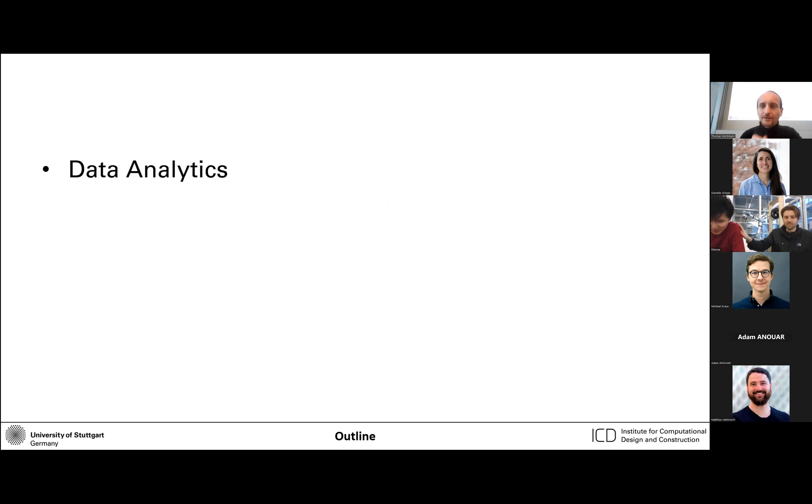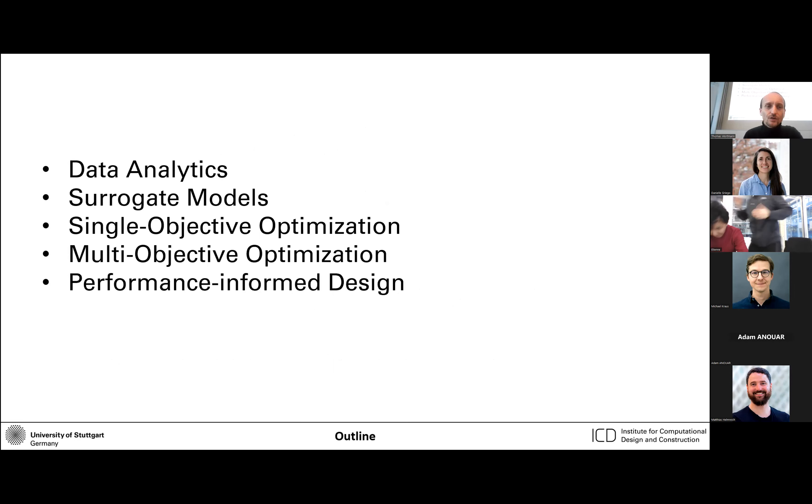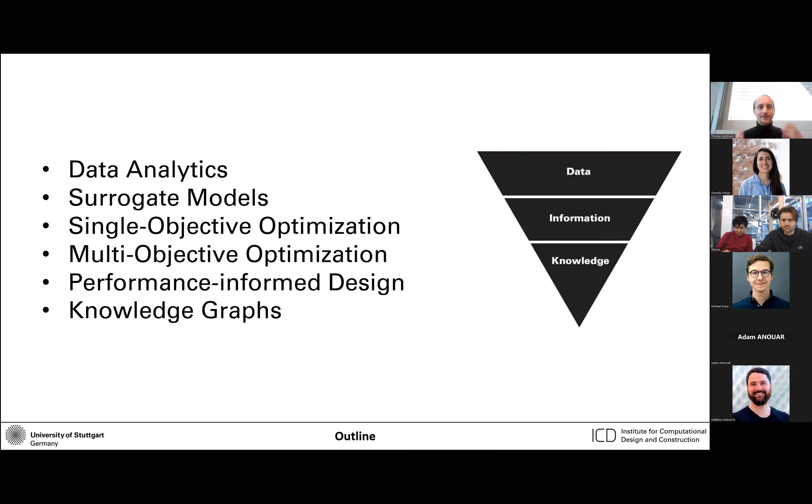We're going to talk a little bit about data analytics, we're going to talk about models, single objective optimization, multi-objective optimization, something I call performance-informed design, and finally, we're going to talk about knowledge graphs. This spans a whole gamut from where do we get our data, what do we do with the data, can we learn from the data, and then finally, maybe we can also use some symbolic AI methods like knowledge graphs. This is kind of the area that I'm covering with my group in computer science and specifically AI methods broadly understood to support the design of the built environment.